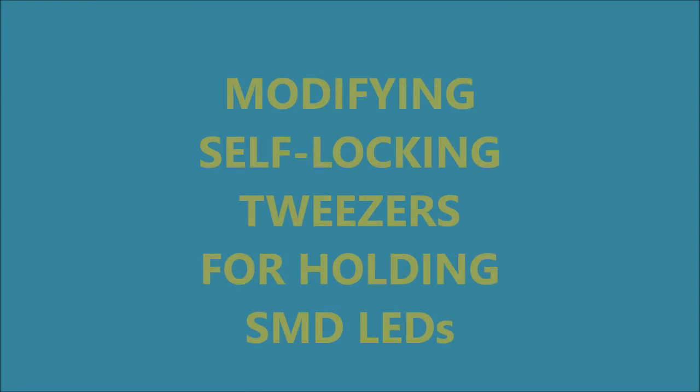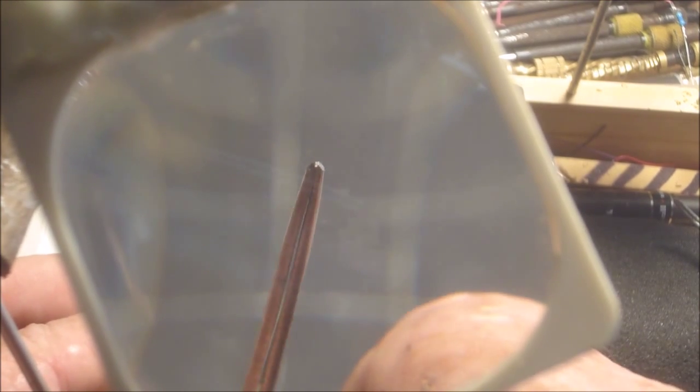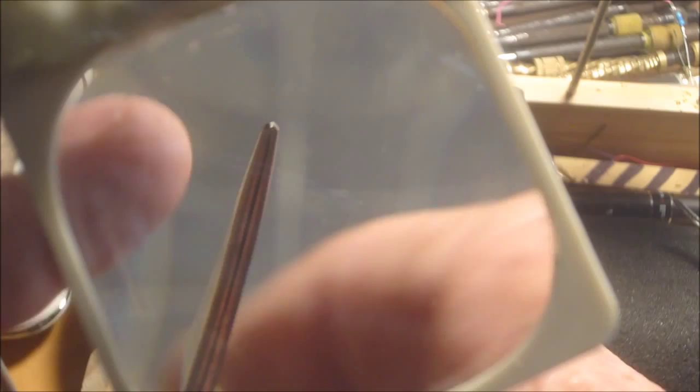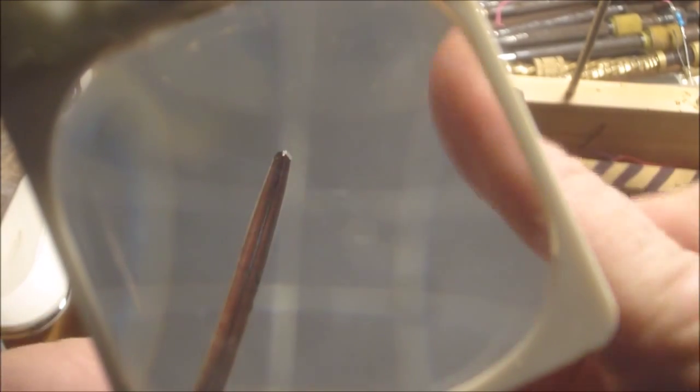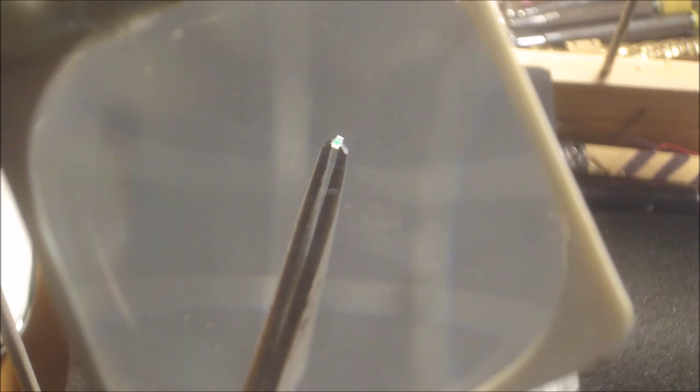This is the self-locking tweezers that I've got. I put a chisel point on it there, so we've got an angle going up that side and an angle going up that side and a little flat across the top. There's just enough to hold the surface mount LED.